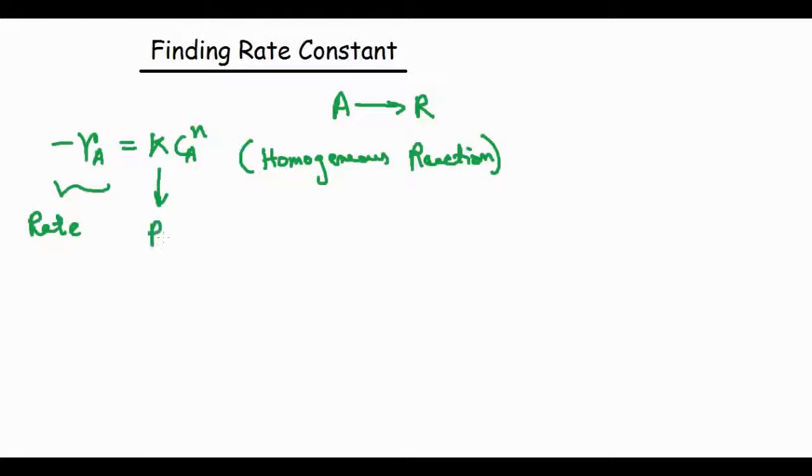K is the rate constant. CA is the concentration of reactant A.